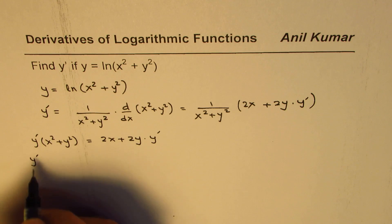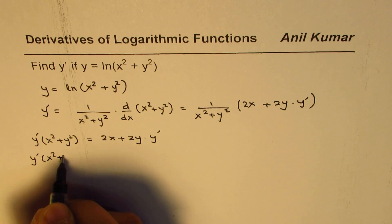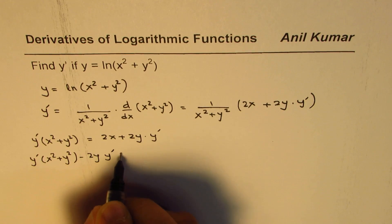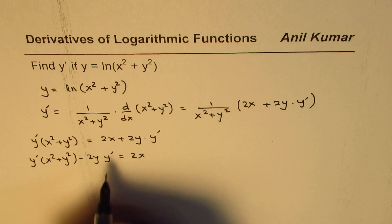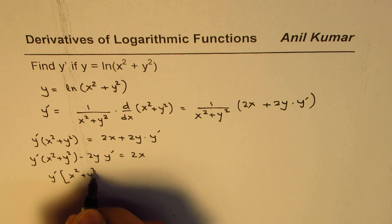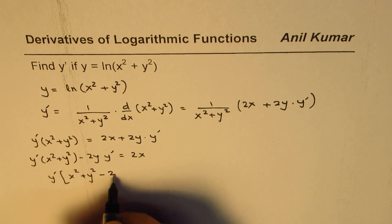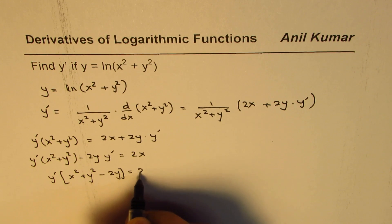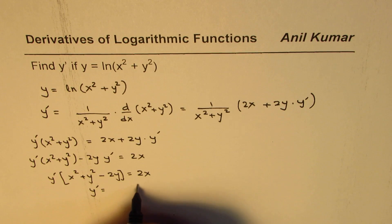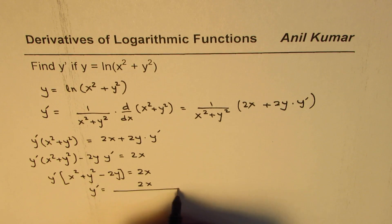So we have y dash x squared plus y squared minus 2y y prime equals to 2x. Taking y prime common, we get x squared plus y squared minus 2y equals to 2x. And now we can say y prime equals 2x divided by x squared plus y squared minus 2y.